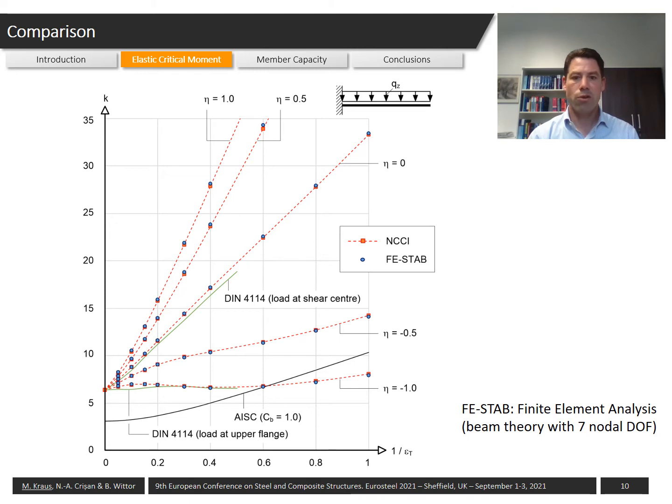In the diagram, the dotted red curves represent the solution of NCCI document, where we see in comparison to the blue dots which represent the numerical solution a very good agreement is being achieved. Also the k factors which were defined by the figures in DIN 4114, they are able to capture the elastic critical moment well as we see in the slide.